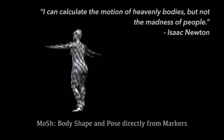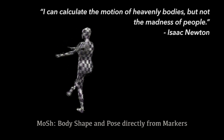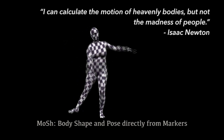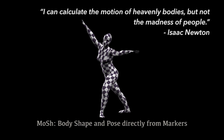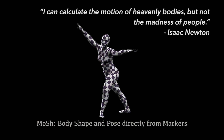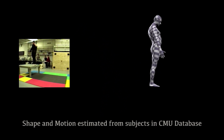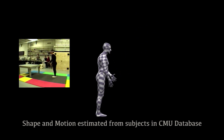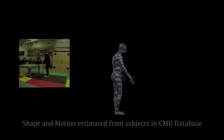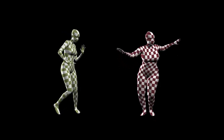Skeleton extraction from sparse marker-based motion capture often produces lifeless animations. MOSH — Motion and Shape Capture — extracts body surface motion and estimates body shape without the use of 3D scans, and allows retargeting with appealing exaggerations.